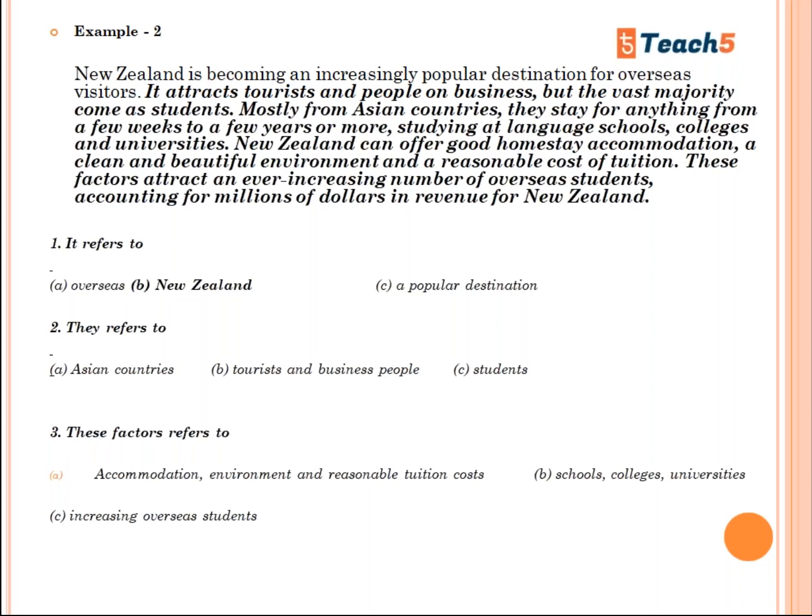Next, what is 'this' referring to? More students are studying at language schools, colleges, and universities. New Zealand can offer good homestay accommodation, a clean and beautiful environment, and reasonable cost of tuition. 'These factors' — the question is: these factors are referring to what? These factors refer to accommodation, environment, and reasonable tuition costs.